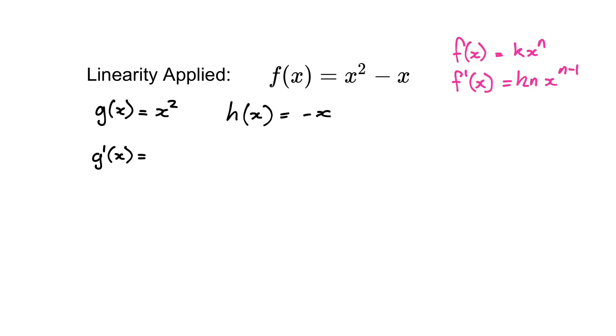So g prime of x - well, in this situation the 2 would come down at the front times by the k which is 1, so we would end up with 2. Then we have x and 2 minus 1 is 1, which we just leave that as being blank.